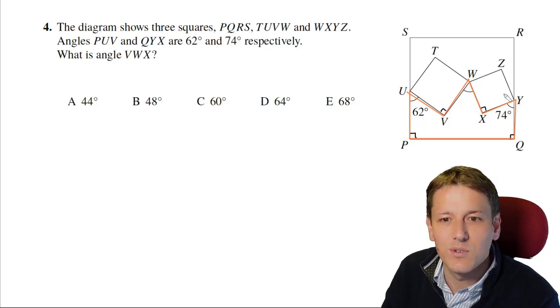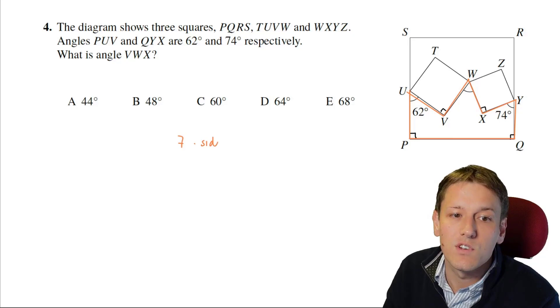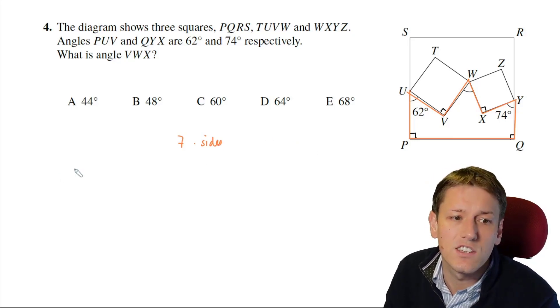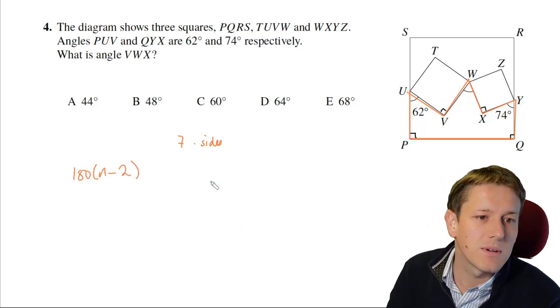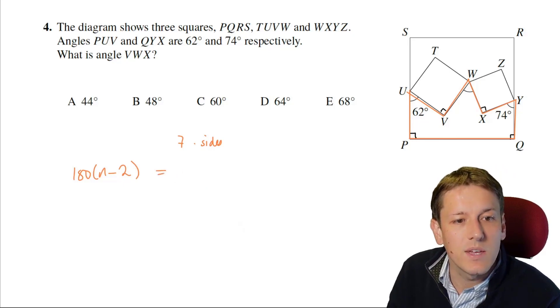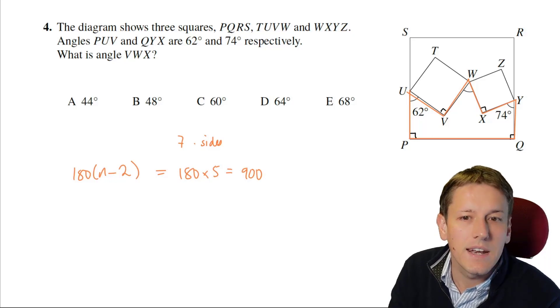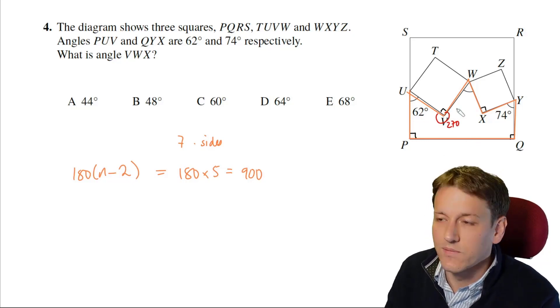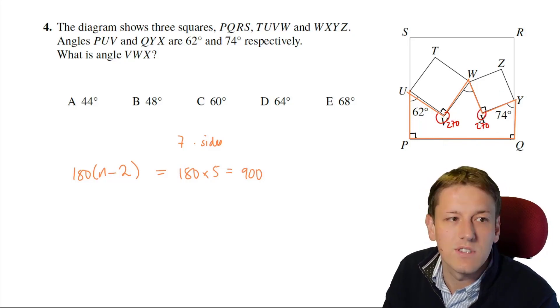And now if we count how many sides that's got, one, two, three, four, five, six, seven sides. So we've got a heptagon, and we know that the sum of the interior angles of an N-sided shape is 180 times N minus 2, something we used in the junior math challenge even. So here that's 180 times 5, which is 900. And now I actually know the other angles in here, because if this is 90 degrees, then that means this is 270, 360 minus 90, angles in a circle, add up to 360, and this one is also 270.